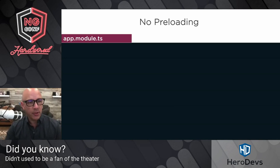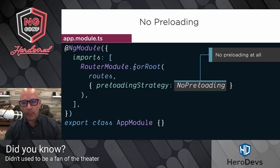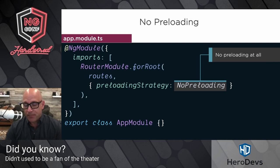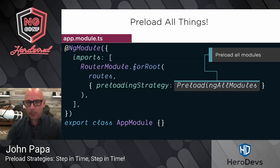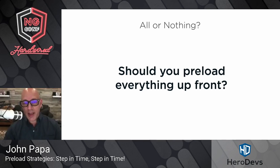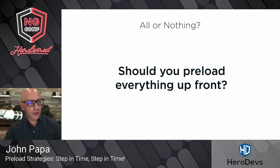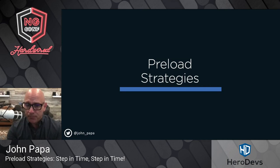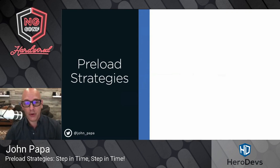The place you define this in your app is inside your router module for root, where you pass a second option with routes and then a preloading strategy. You can set preload nothing — the default — or preload all things. I'm going to show you three options, because I like the rule of three: three different ways to preload your JavaScript bundles. First, you can opt in or opt out — pick which bundles to preload. For example, preload the customer site bundle but not the admin piece.